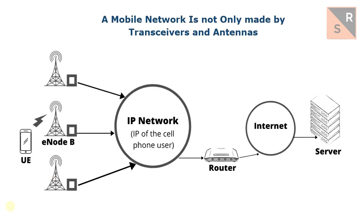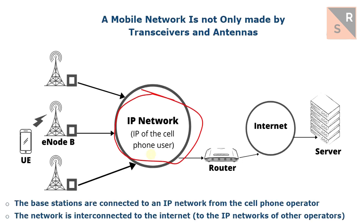A mobile network isn't limited to antennas — it is a group of base stations spread out over a territory. The base stations are connected to an IP network deployed by the cell phone operator. This network is interconnected to the internet and to the IP networks of other operators via one or several routers.